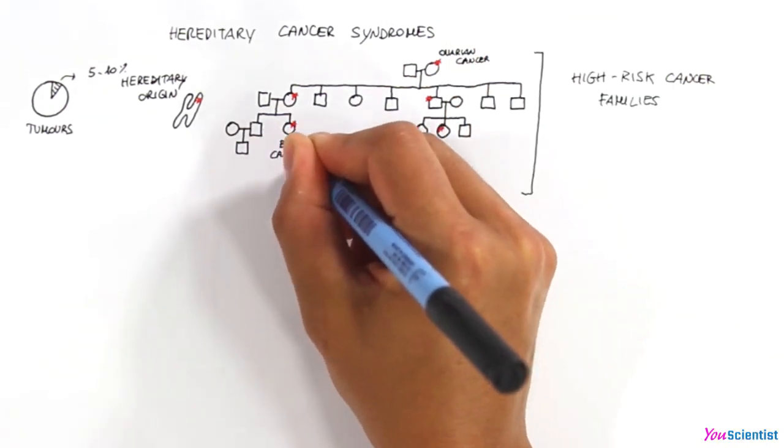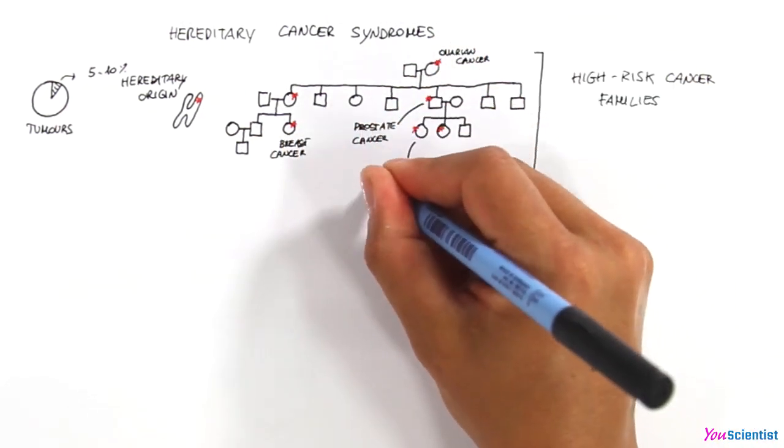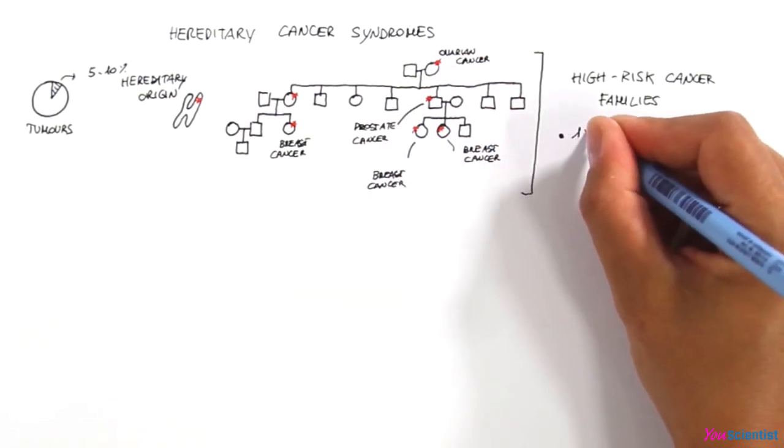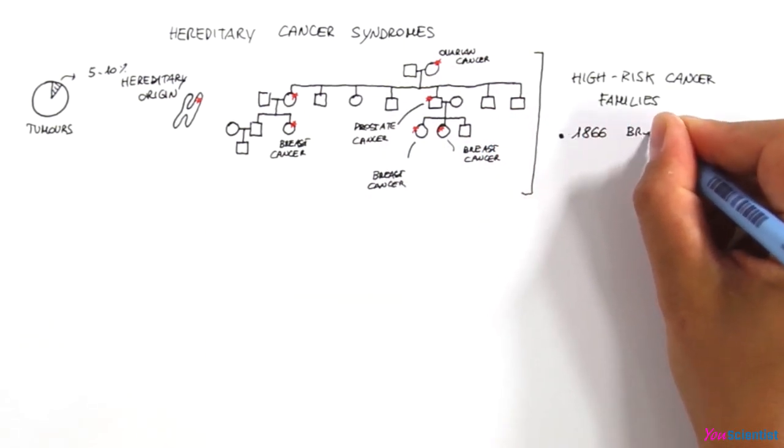families in which cancer occurs with an extremely high rate, has been known for a very long time. The first case was recorded in 1866 by the surgeon Brocca.